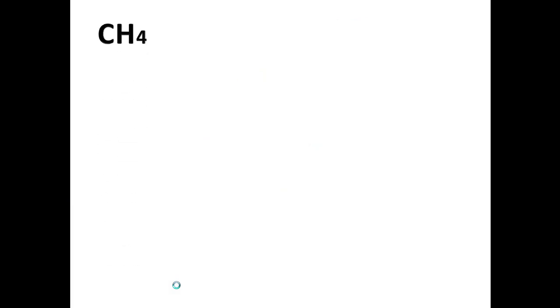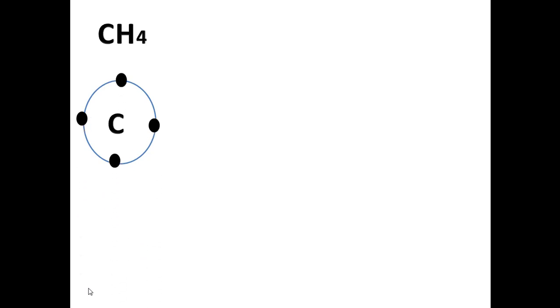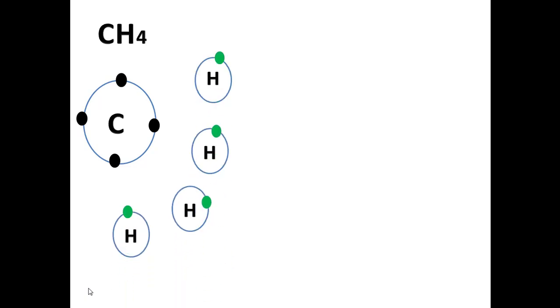Let's start with this molecule methane, which consists of hydrogen and carbon — both are non-metals. Carbon has four electrons in its outer shell, and hydrogen has one electron. These atoms are not stable because their outer shells are not filled with electrons. And if we want to make ionic bonding here, there is no giving of electrons.